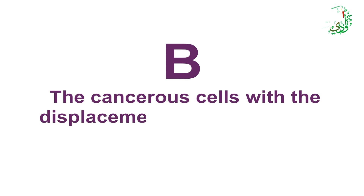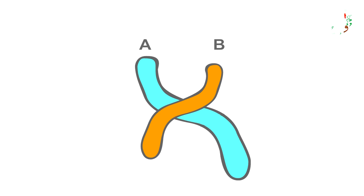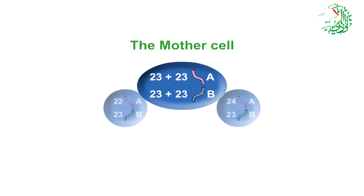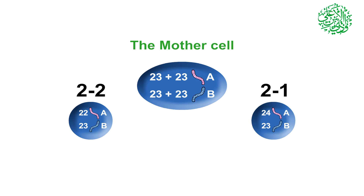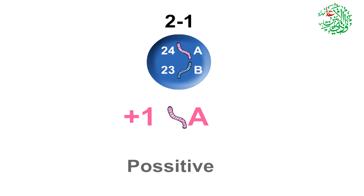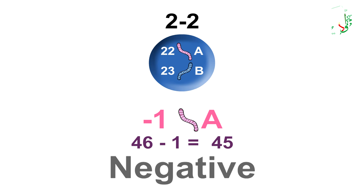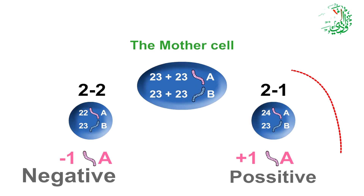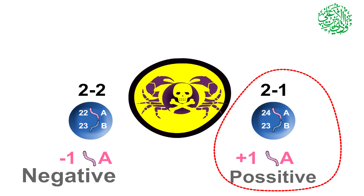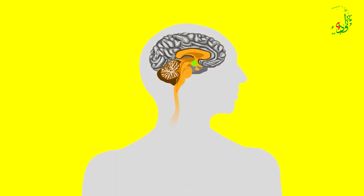Category B: cancerous cells with chromosome of set A. In these cells, the division of set B chromosomes is done correctly, but set A chromosome's division faces disorder. Thus, each divided cell has an unequal number of chromosome A. Cancerous cell number 1, with an extra chromosome A, has 47 chromosomes and its total charge is positive. Cancerous cell number 2, lacking a chromosome A, has 45 chromosomes and its total charge is negative. In males, cancerous cell number 1 is malignant and causes malignant tumors; cancerous cell number 2 is benign, commits suicide, or is controlled by the defense system, causing benign tumors.